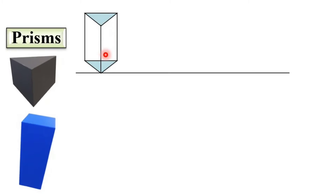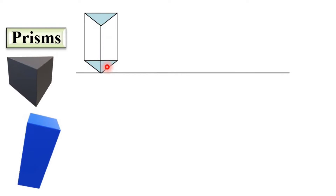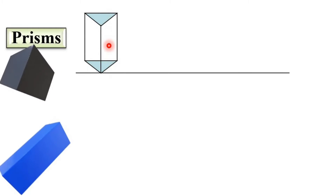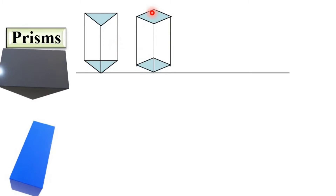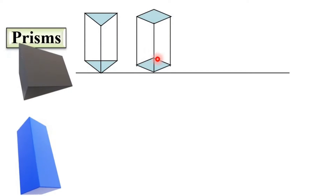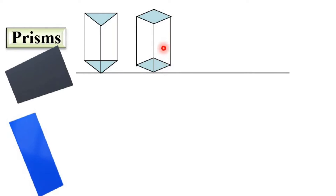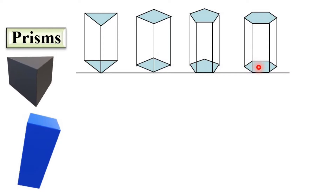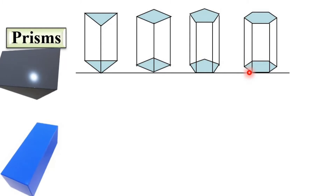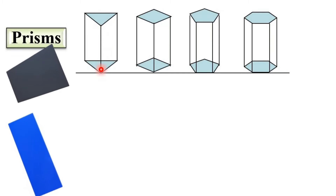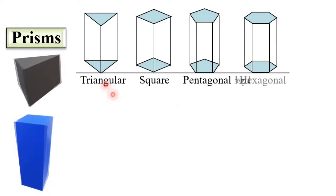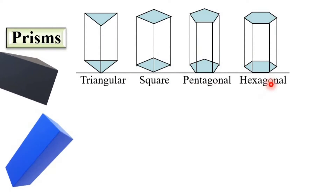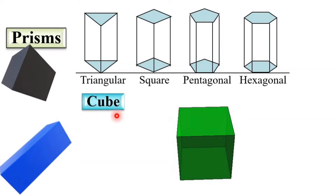Here is a prism where top and bottom are the same shape — a polygon. If that polygon is a triangle, it is a triangular prism. If it is a square, it is a square prism. Similarly, you can have a pentagonal prism and a hexagonal prism — the top and bottom can be any polygon, and the prism is named accordingly.